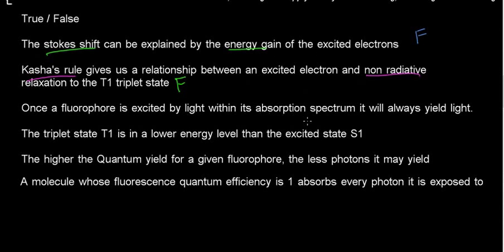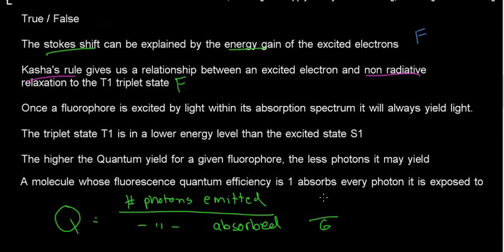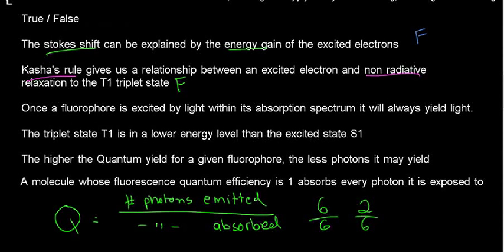Once a fluorophore is excited by light within its absorption spectrum, it would always yield light. We know that we have a parameter called the quantum yield, which is the number of photons emitted over the number of photons absorbed. Different fluorophores emit some amount of energy out of the energy they absorb, and the quantum yield is not always going to be 100%. It can be six photons absorbed but only two emitted.